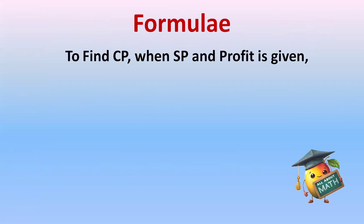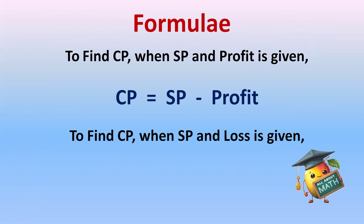Formula to find cost price when selling price and profit is given: cost price is equal to selling price minus profit. Formula to find cost price when selling price and loss is given: cost price is equal to selling price plus loss.